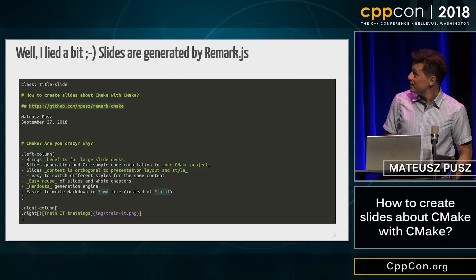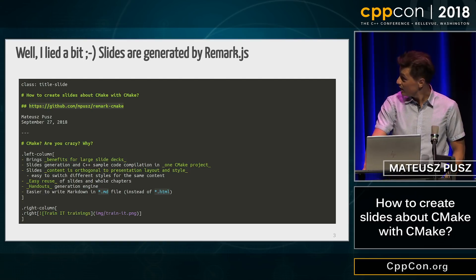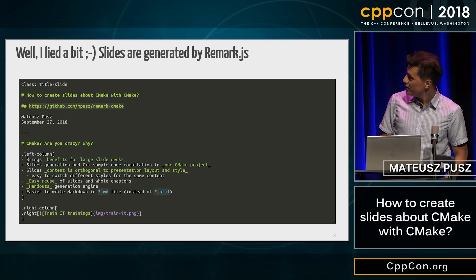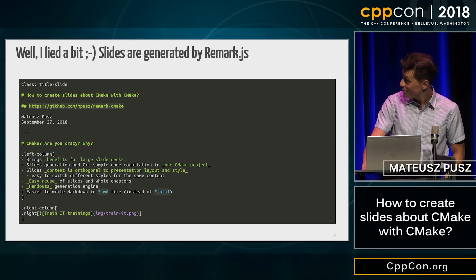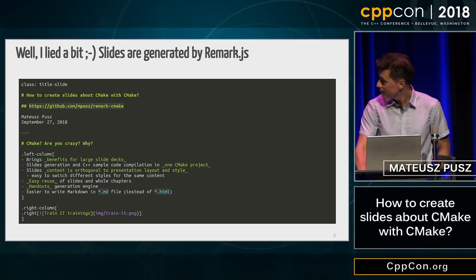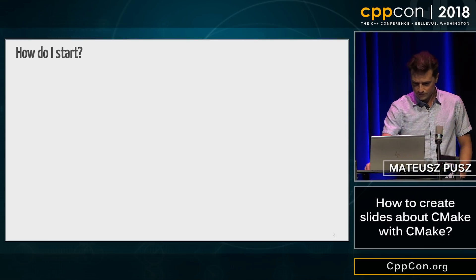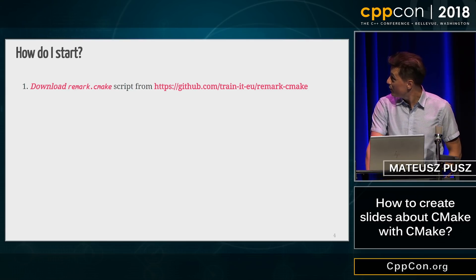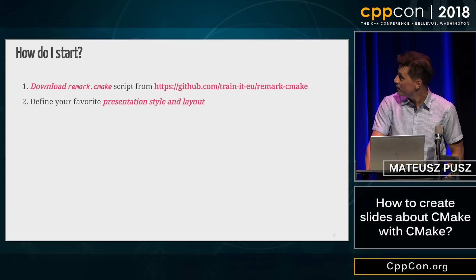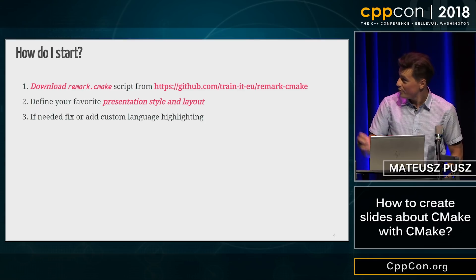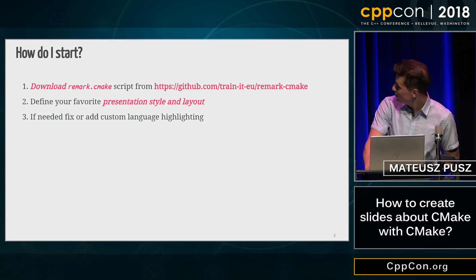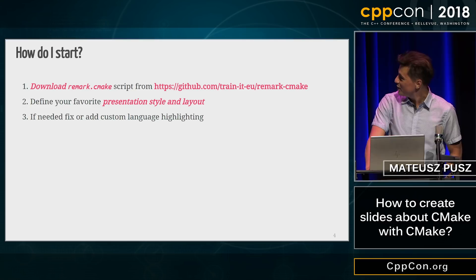I'm not doing the slides in CMake — I'm using Remark.js, and these are basically those two slides from before, written in Markdown, as you can see. It's pretty easy and it's much more fun than doing PowerPoint. To get started, download it from my GitHub and define your style. This pink style is not really the best one — I did it especially for this presentation.